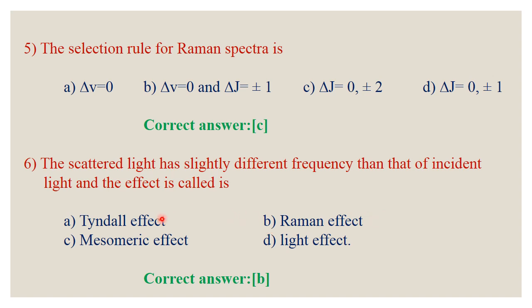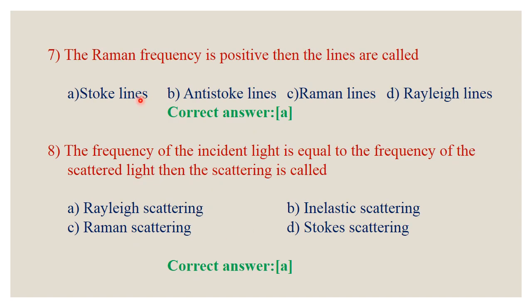The Tyndall effect occurs when incident frequency equals scattered frequency. The light effect is not a mesomeric effect. Question number 7: If the Raman frequency is positive, then ν_i > ν_s, and those lines are called Stokes lines. The correct answer is A.